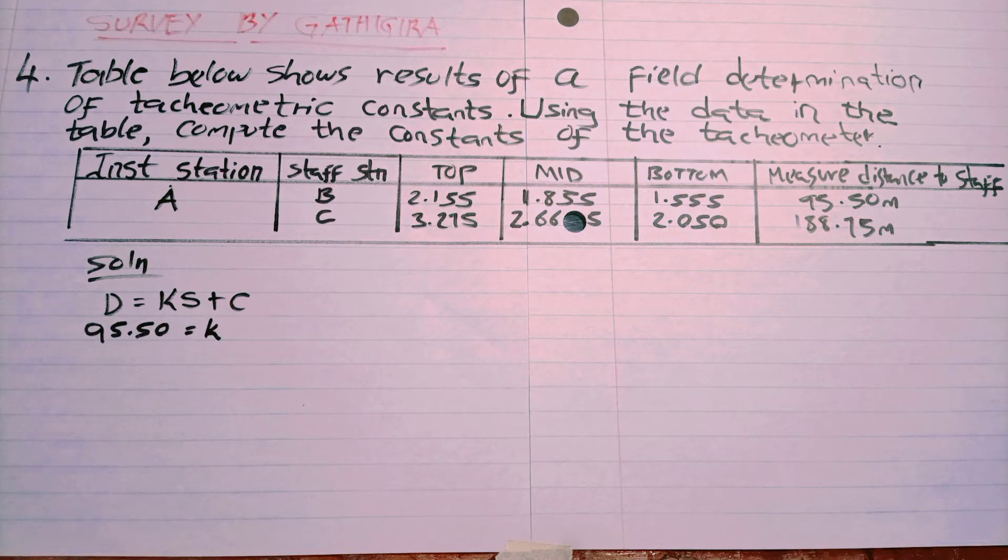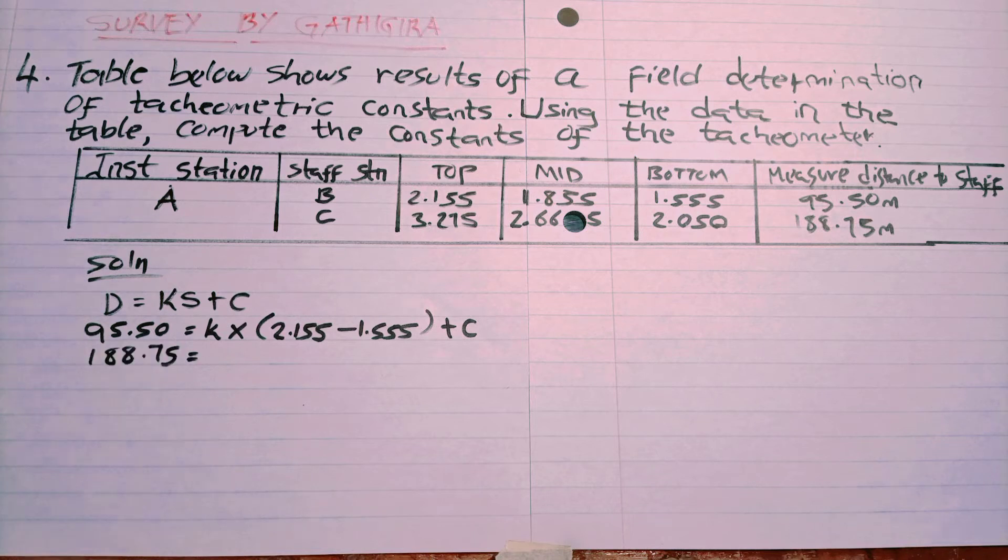By the formula for determining the horizontal distance in tacheometry, D equals KS plus C. D is the distance to the staff station, K is the constant which we multiply by S (the difference between the top and the bottom reading), plus C.